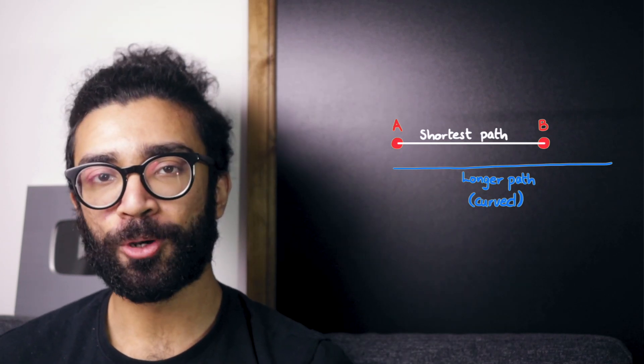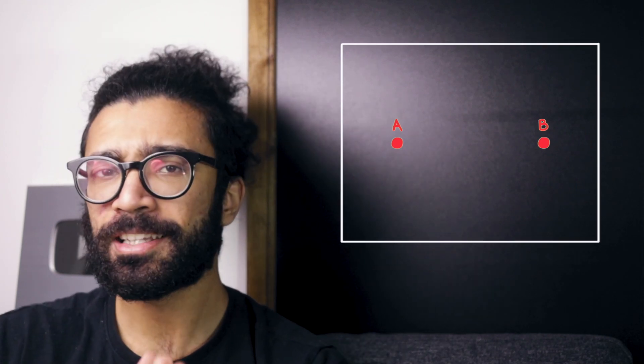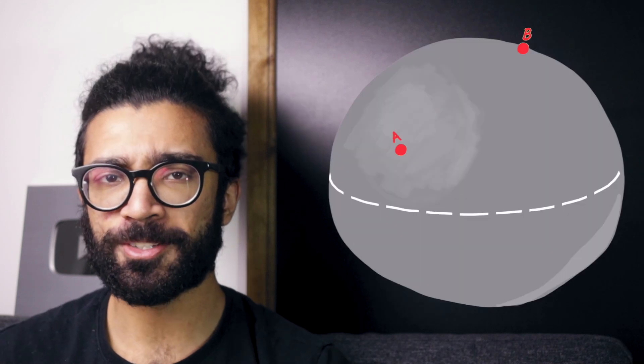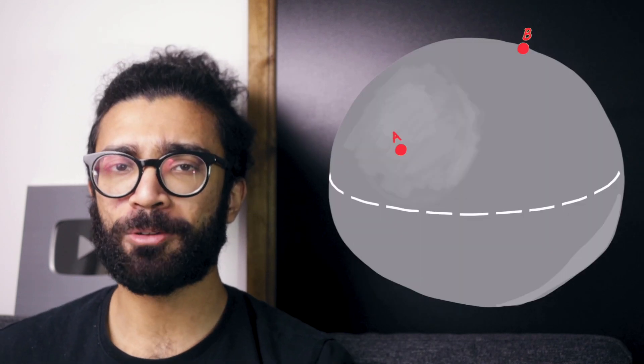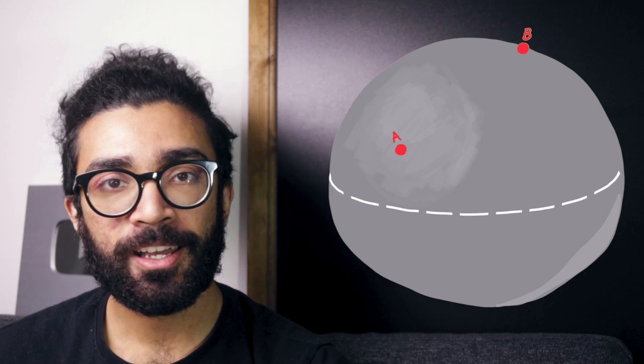But now let's imagine that these two points A and B are not on a nice flat surface like a piece of paper or your computer screen. Let's imagine that these two points are now on the surface of a sphere, and also that we're restricted to moving along that surface.